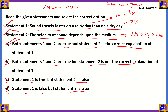That means option A turns out to be the right option. A popular trick to determine if statement two is the correct explanation for statement one is to add the word 'because' between the two sentences and read them continuously: 'Sound travels faster on a rainy day than on a dry day, because the velocity of sound depends upon the medium.' As you can see, that statement makes complete sense. Therefore, option A — both statements are true and statement two is the correct explanation of statement one — is the right option.